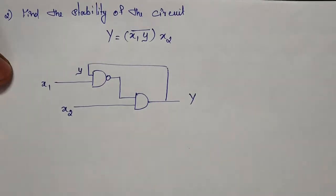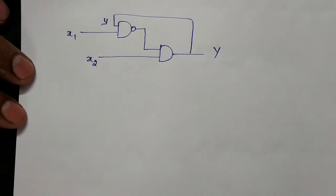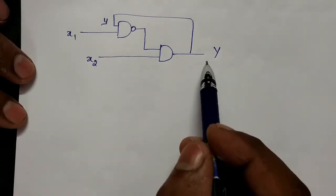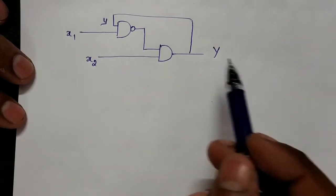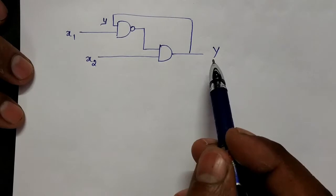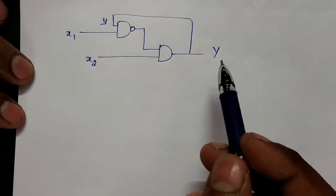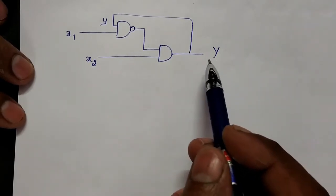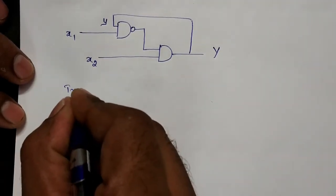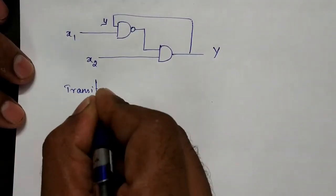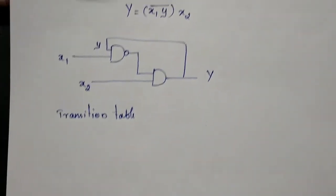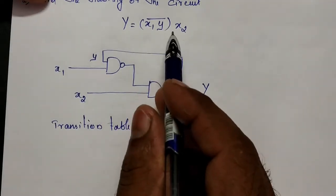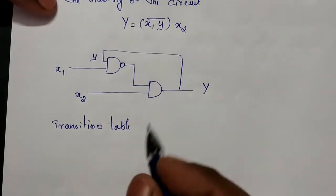First we need to go for the transition table. Since we have only one output excitation or next state, there is no need to draw a map for each state separately. We can directly go for the transition table.